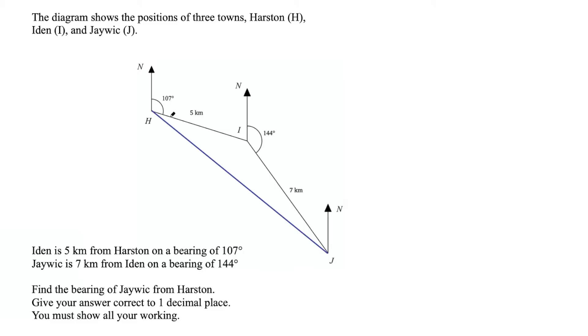Now what we're missing is this part in here. So really the entire question is asking, find this angle in this triangle. So let's call that theta. This is our unknown that we're going to be looking for in order to find the bearing of Jaywick from Harston. And to find that angle, usually what you're going to use in these types of questions is either the cosine rule or the sine rule. So before we decide which one we're going to use, let's fill in some of the information.